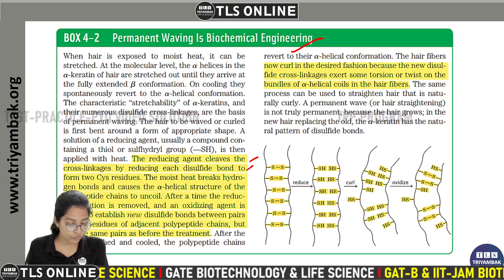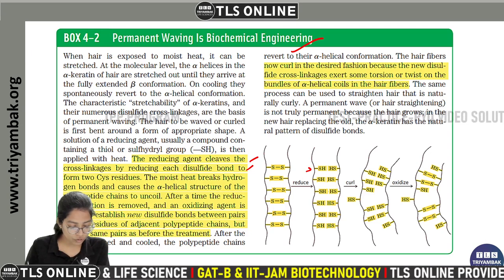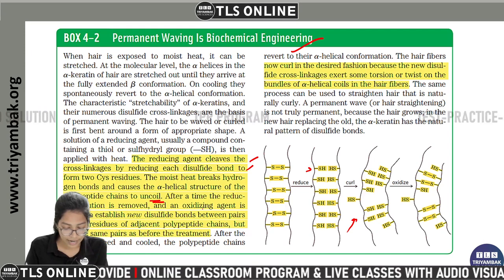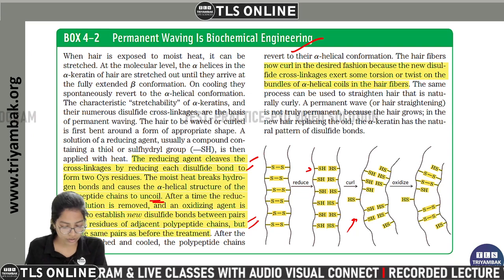Moist heat breaks hydrogen bonds and causes the alpha-helical structure of the polypeptide to uncoil. After a time, the reducing solution is removed, and an oxidizing agent is introduced to stabilize new disulfide bonds between pairs of cysteine residues on adjacent polypeptides.